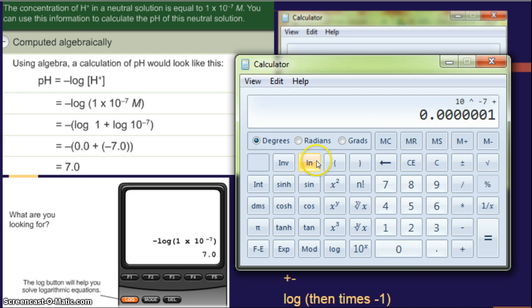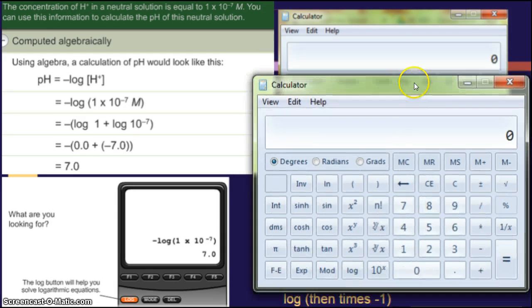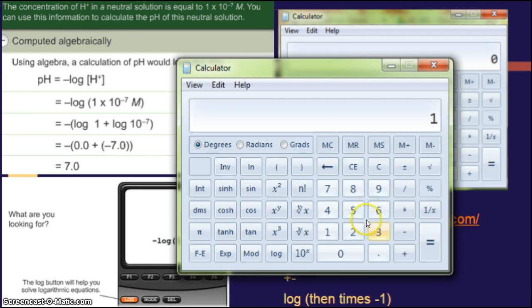And then I need to take the log of that number, so log. 10 to the 7th, make it negative. I hit the plus sign just so I could see it for sure. Then I hit the log button. Now this answer is negative. Your pHs are always 0 or a positive number up to 14. So we have to take this answer and multiply it by what? We have to multiply it by a negative 1, or you can just say, okay, I know the answer is positive 7.